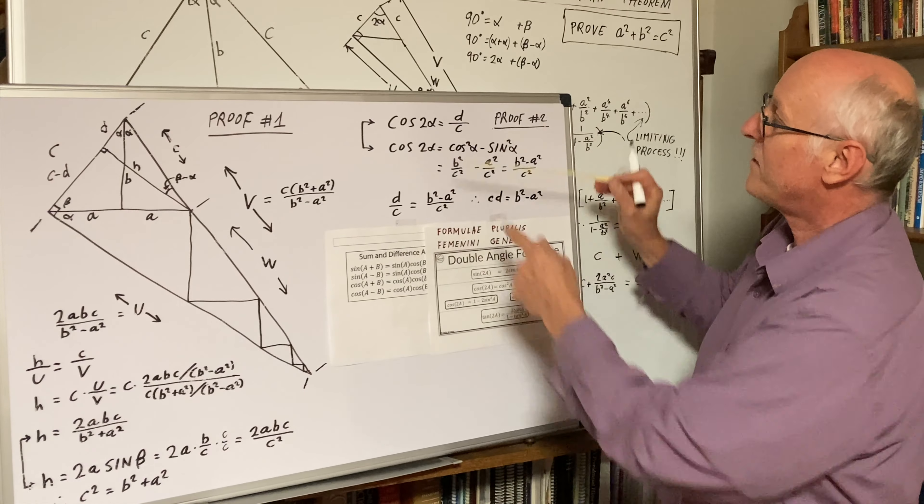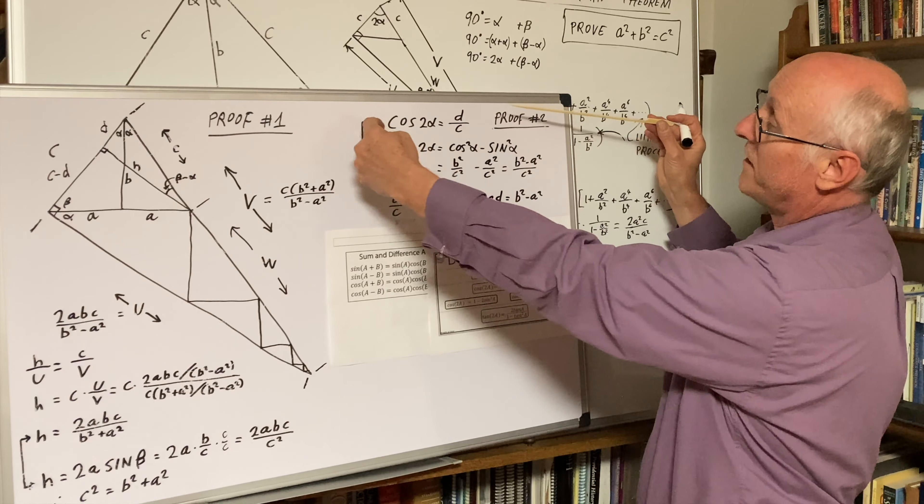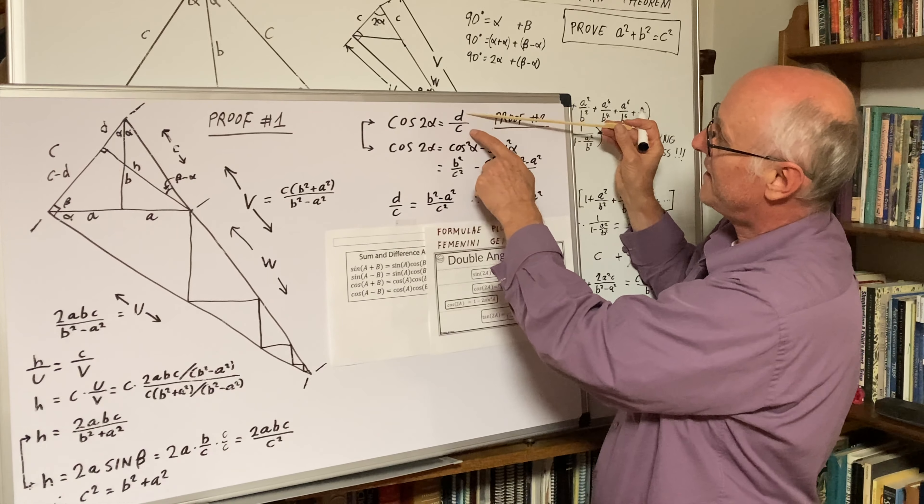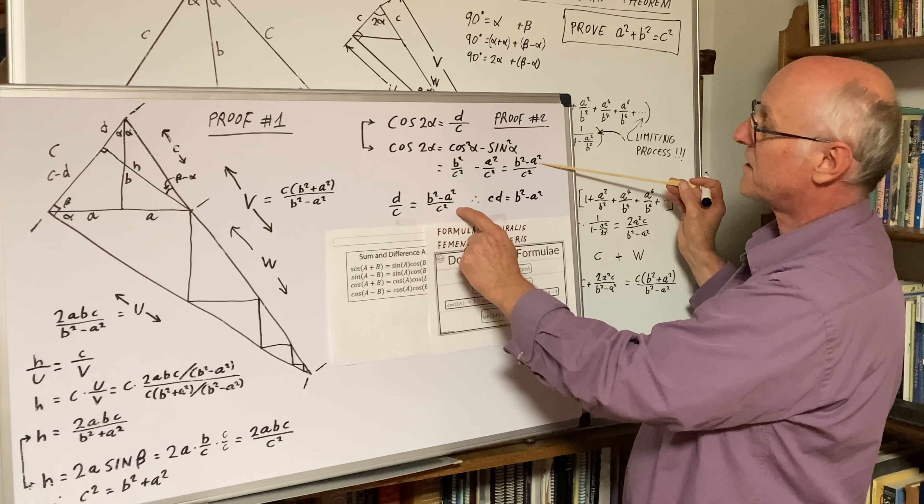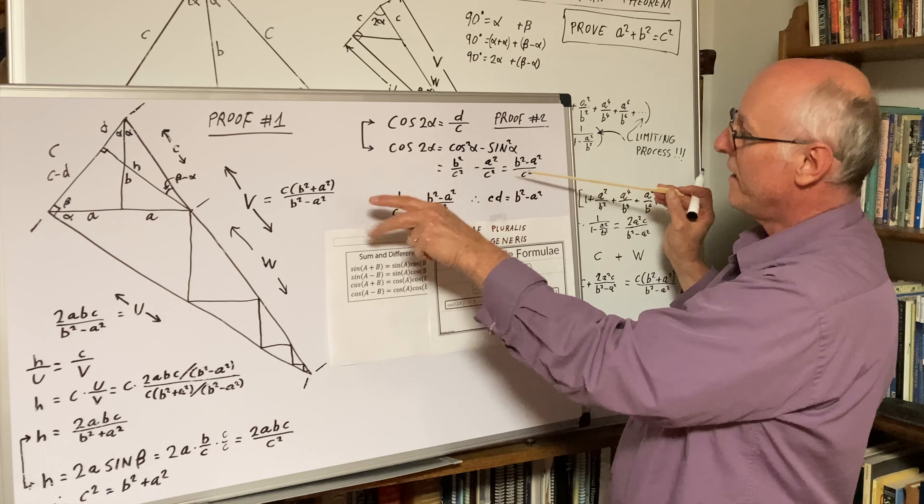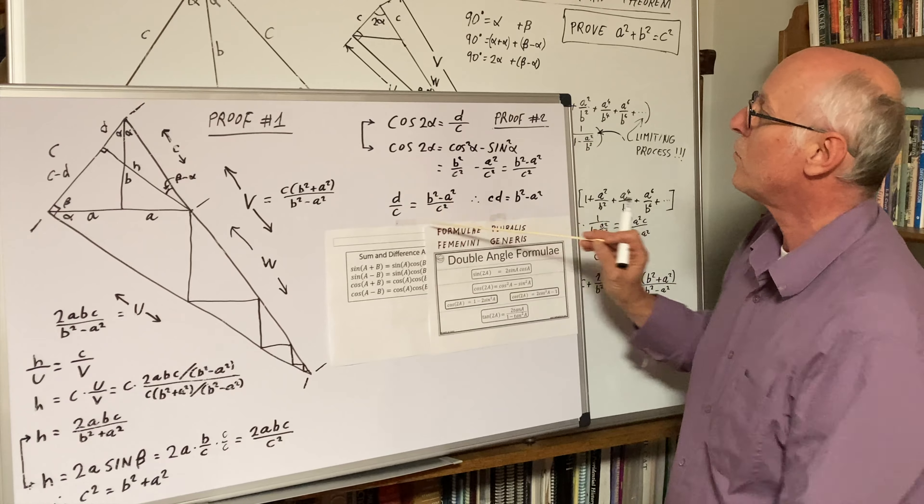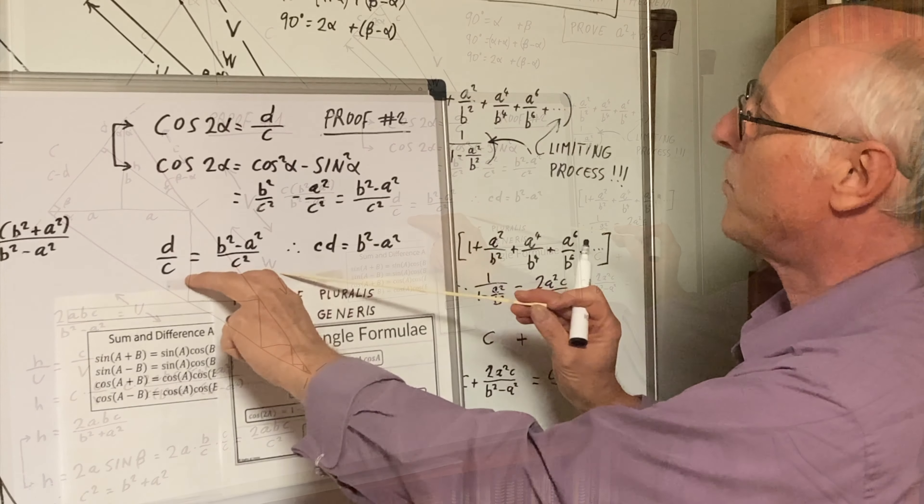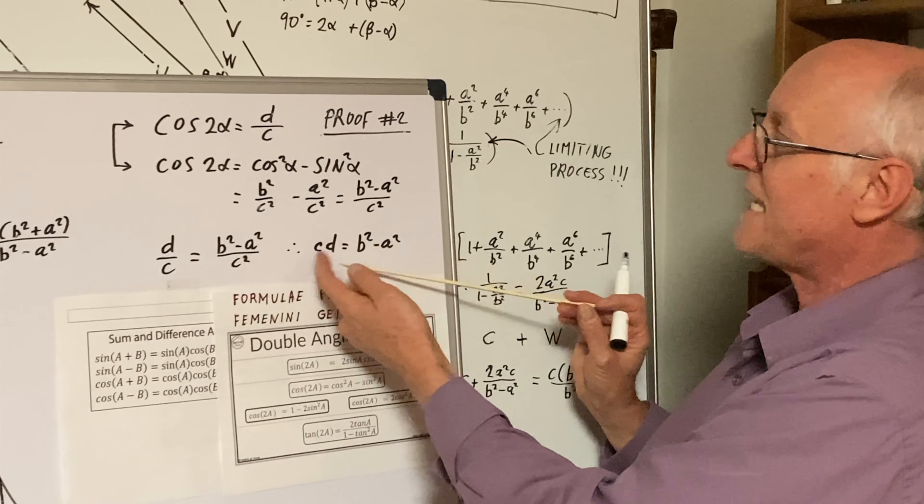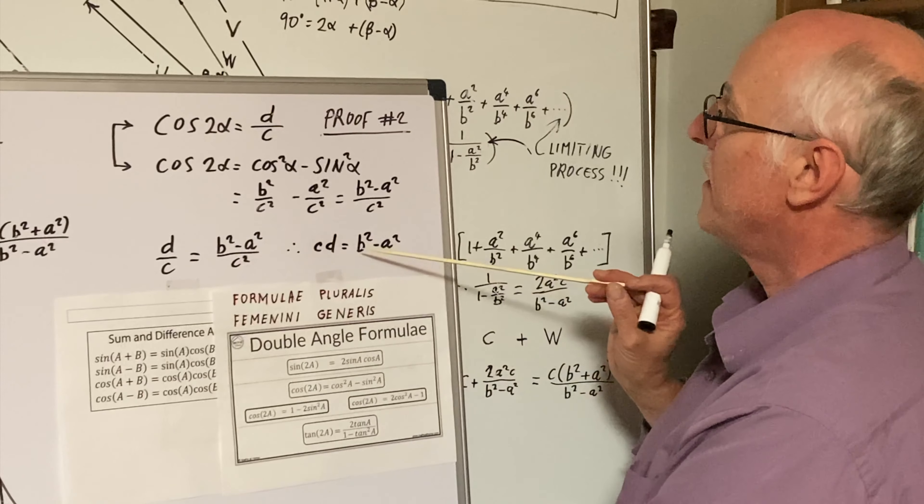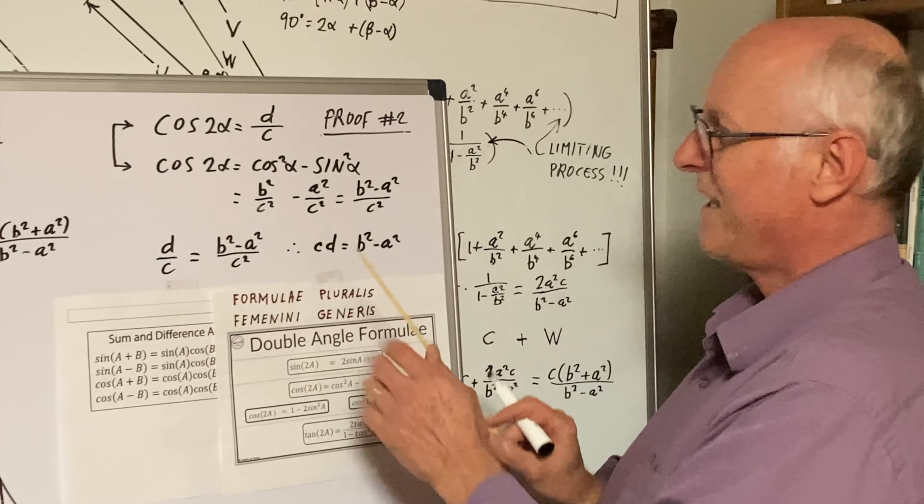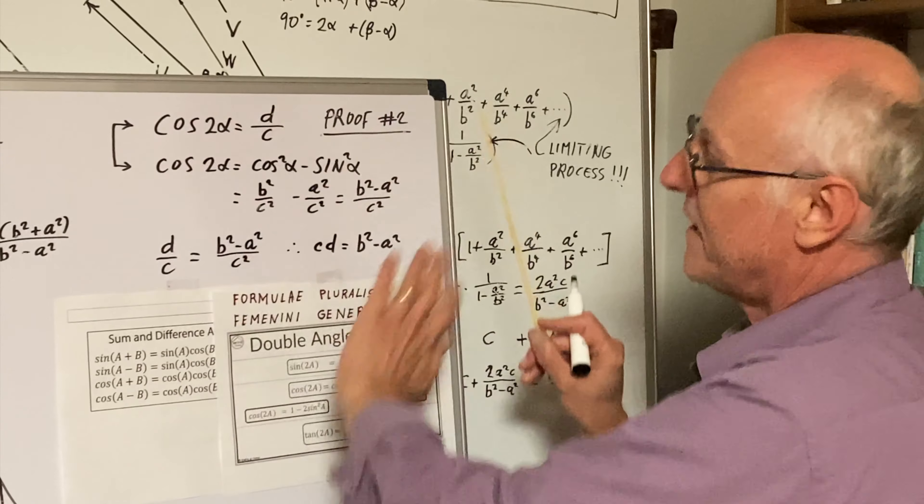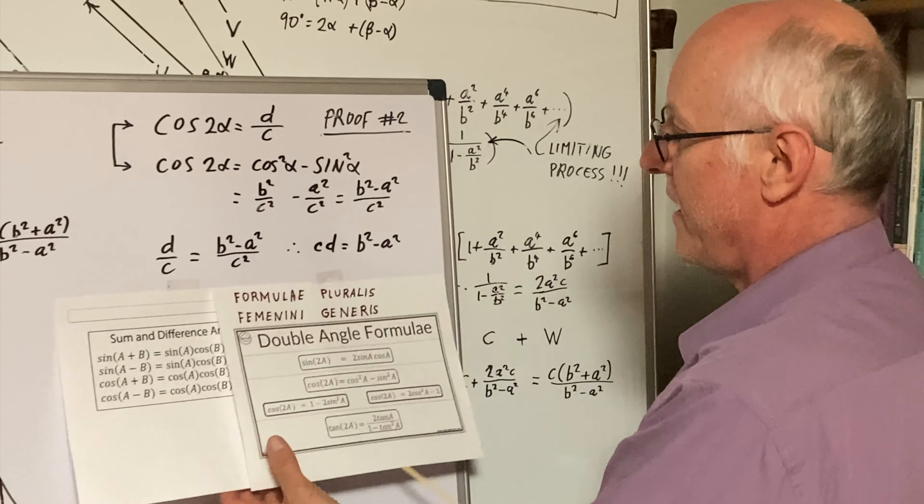We leverage these two against each other. These two are equal, so we can set D over C equals B squared minus A squared over C squared. Multiply through by C squared to get rid of the numerator. You get CD equals B squared minus A squared. That's kind of one half of it.